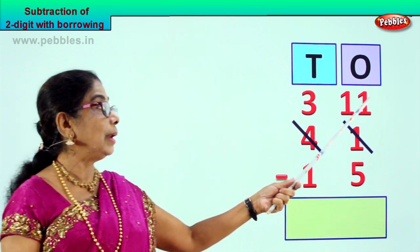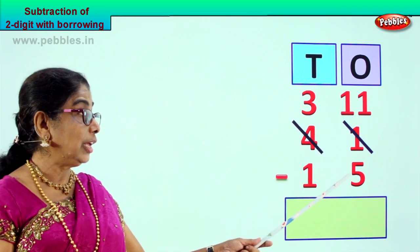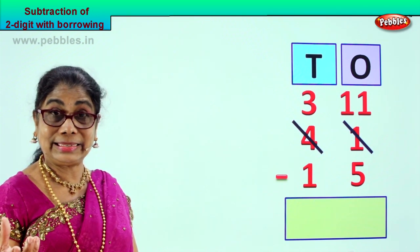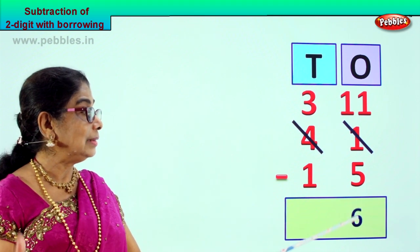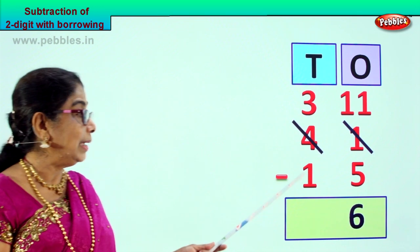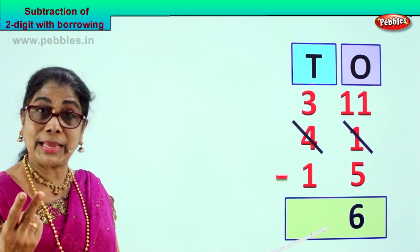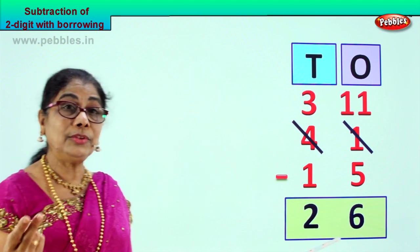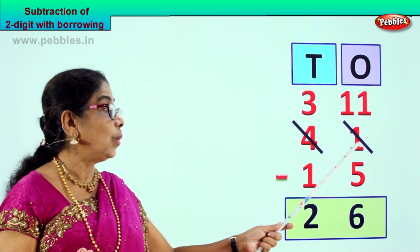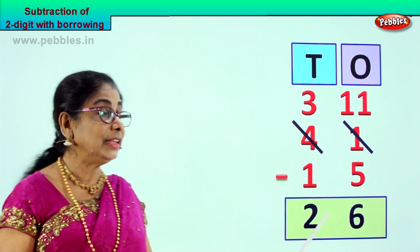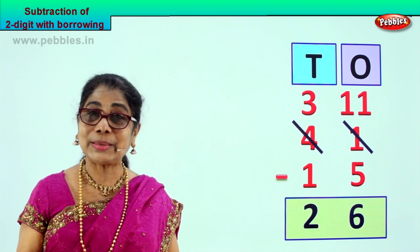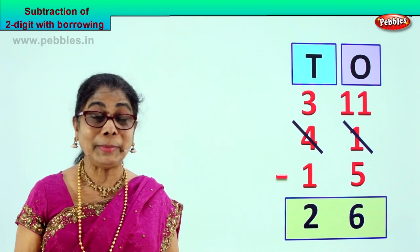When you take away from the big number 11, you take away minus 5, you get 6. What is the balance? 6. Now here, 3 tens minus 1 ten is 2 tens, so you get 2 here. Your answer is 26. 41 minus 15 gives you 26. Now you learn 2 digit subtraction by borrowing method.